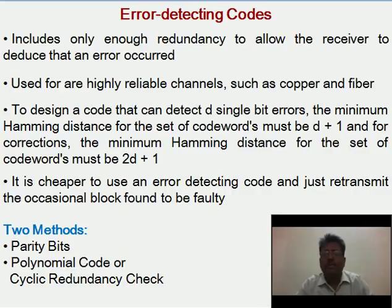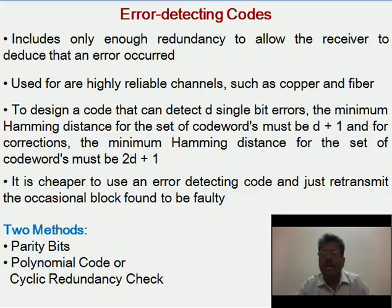Regarding the design issues for Error Detecting and Error Correcting Codes: to design a code that can detect d single-bit errors, the minimum Hamming distance for the set of code words must be d plus 1. The cost of Error Correcting Codes is higher than Error Detecting Codes. It is cheaper to use Error Detecting Codes, as the cost is only to retransmit the message.